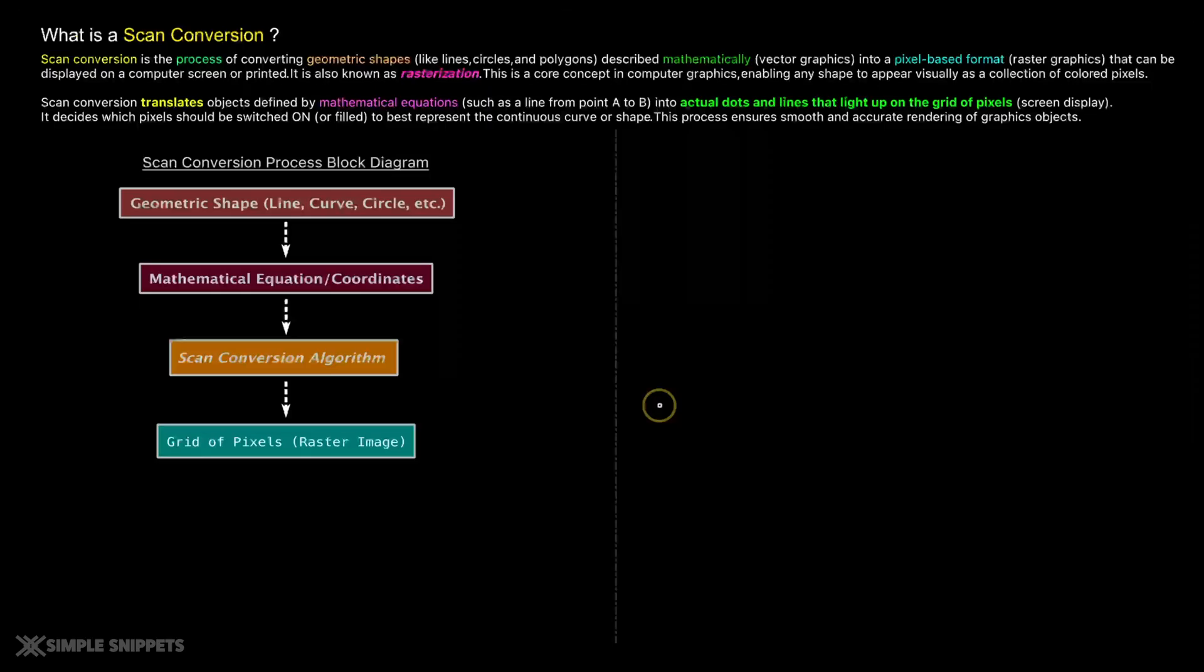Now if you've watched any of the previous videos in this computer graphics playlist, we've covered the basics, we've talked about CRT, we've talked about the different types of scanning that is raster scan and vector scan and now we are moving ahead with something very important, a subtopic called a scan conversion and we're gonna see some algorithms, we're also gonna see the practical side of this but before we proceed,